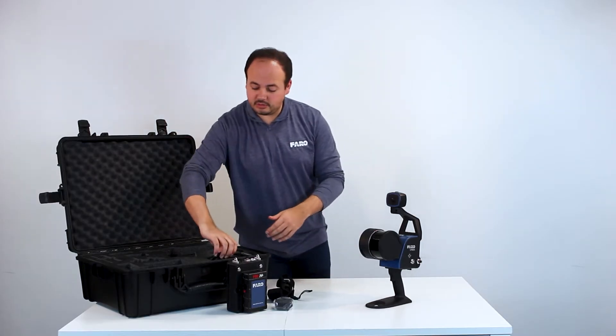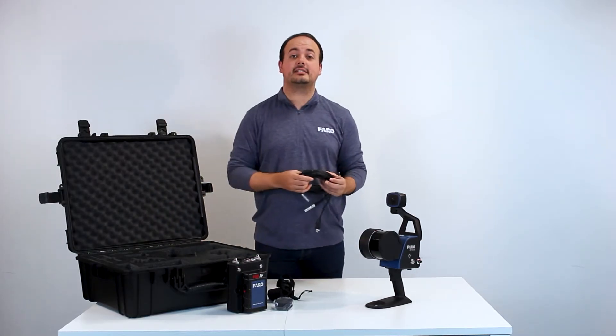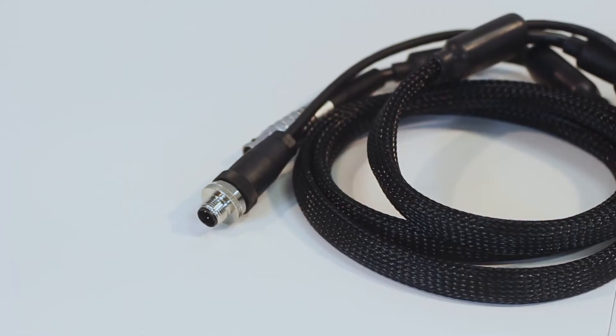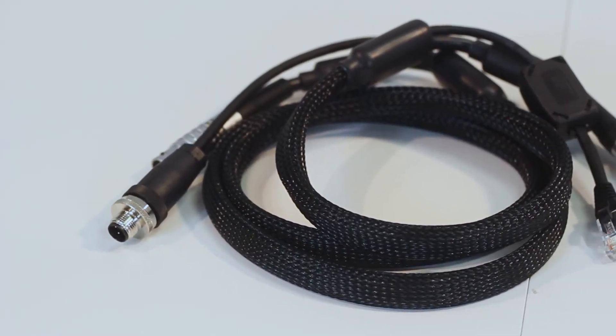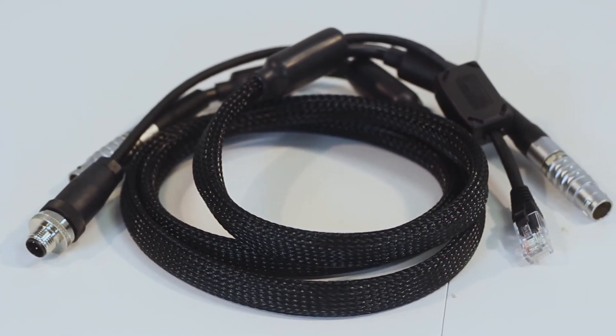The system comes with two power cables. One connects the data logger to the scanner, the other connects the data logger to the camera. Both need to be plugged in for the system to be operational.